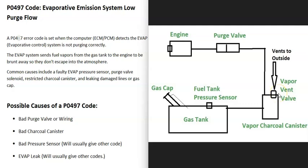The vent valve does different things. The computer can use it to test the system — it'll close the vent valve and then check the pressure inside the system to see if there are any leaks. A hose then leaves the charcoal canister, goes up to the engine compartment, where there's what's called a purge valve. The purge valve opens when the engine is running so the gas vapors can go in and get burnt off, and it closes when the engine is not running so they don't escape. That's a basic overview of the EVAP system — be sure to get a diagram for your vehicle.